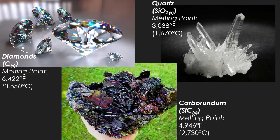Finally, the more common example we've all seen is quartz, which is silicon dioxide. Quartz is commonly found in commercial goods — for example, the face or glass of a watch is actually made of quartz. It is incredibly hard, which prevents your watch face from getting scratched, and it melts at around 3,038 degrees Fahrenheit. All three examples are incredibly hard, shatter when hit hard enough — making them brittle — melt at very high temperatures, and do not allow heat or electricity to flow through them.